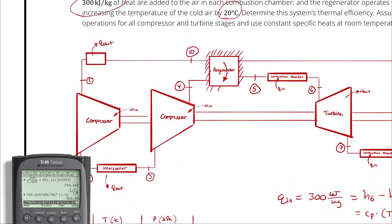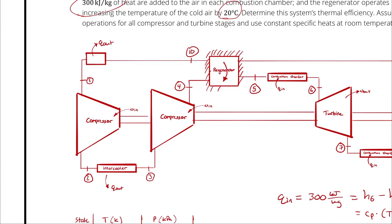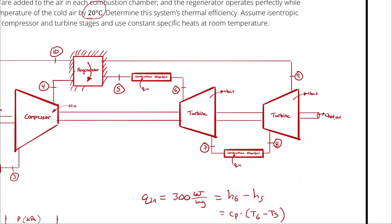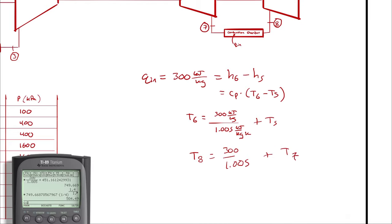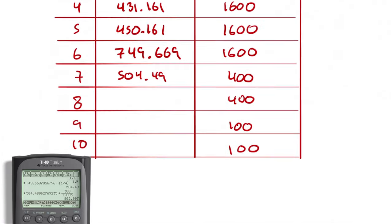Unlike the intercooler case, we cannot assume T8 equals T6 because we have explicit information: the reheating combustion chamber also adds 300 kJ/kg. So T8 = T7 + 300/1.005 = 504.49 + 298.507 = 802.997 K.